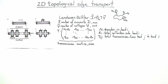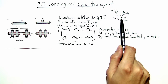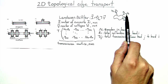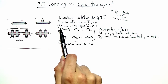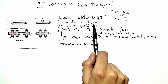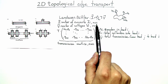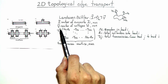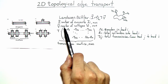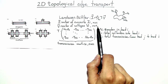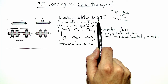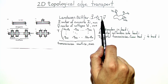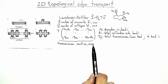Within the multi-terminal Landauer-Büttiker framework, if we have a system with N terminals, we can associate a current I and a voltage V to each terminal lead. We collect all the currents into a current vector I, which is an N-by-1 vector, and similarly collect the voltages into vector V, also N-by-1. Landauer-Büttiker tells us that the current vector is related to the voltage vector by the conductance quantum e²/h and the transmission matrix, which is an N-by-N matrix.